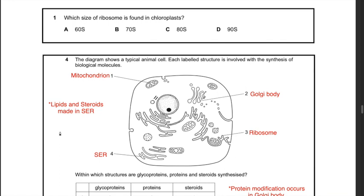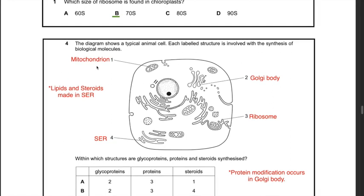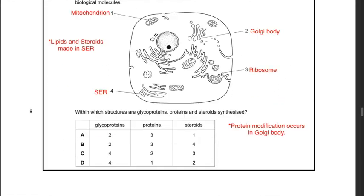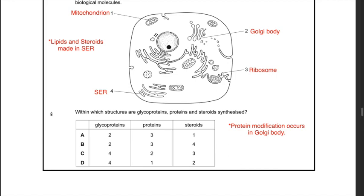Question 18: which size of ribosome is found in chloroplasts? A key thing to remember is that chloroplasts, mitochondria, and prokaryotic cells all have 70S ribosomes. Hence the best answer is B — 70S.